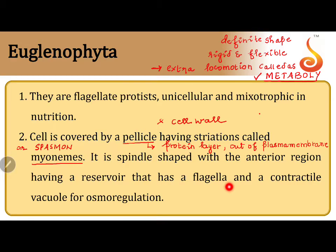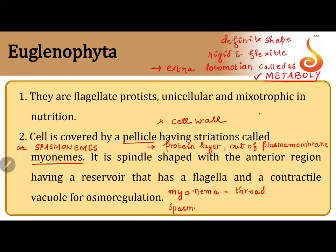Myonemes are also called spasmonemes. The word 'nema' means thread, so a myoneme is a thread-like structure that acts like a muscle. We also call it a spasmoneme, meaning a thread-like structure that contracts — 'spasmo' refers to contraction.